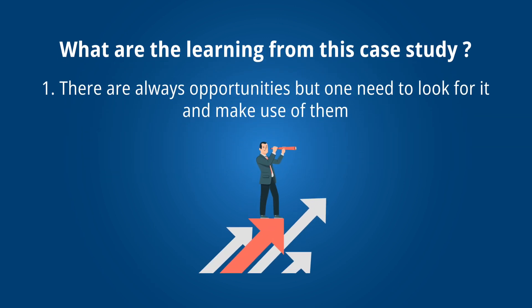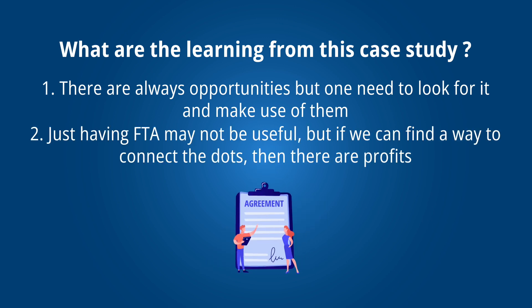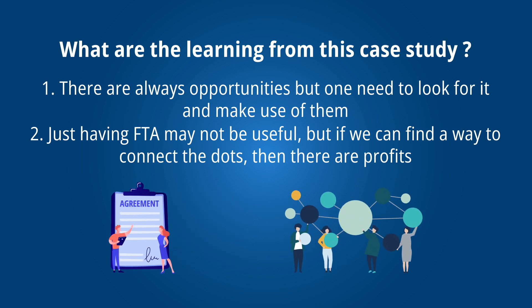The lessons from this case study are clear. First, there are always opportunities — one needs to keep looking for them and make use of them. There is no point in complaining there are none. Everything was there for centuries: we were always harvesting black rice, but this idea never came. It became a win-win. Second, just having an FTA may not be useful by itself. What is important is finding a way to connect the dots — which products are popular, who the consumer is, which country it is going to. That habit of connecting dots is what every entrepreneur needs to build.